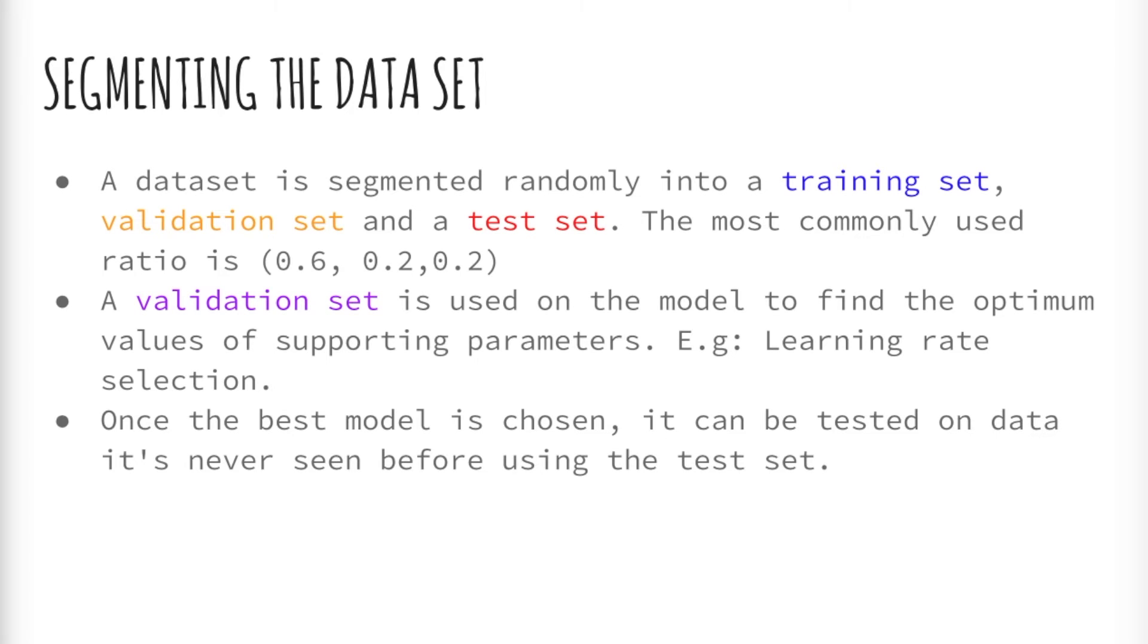Usually when performing machine learning on real datasets, we do not train on one dataset and use it to make further predictions. Instead, we segment the dataset randomly proportioned by some percentage into a training set, validation set, and test set. The most commonly used split is 60, 20, and 20. The training set is used to train the model and find the weights based on that data exclusively.